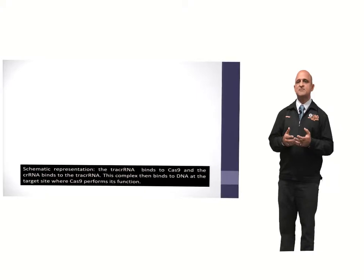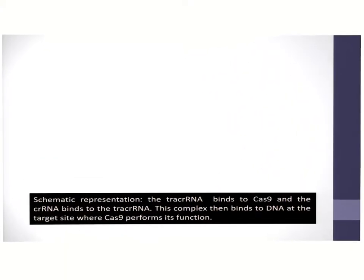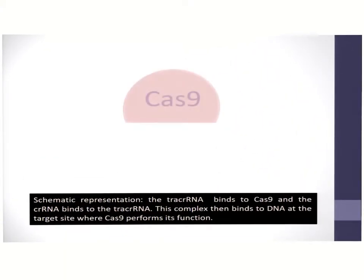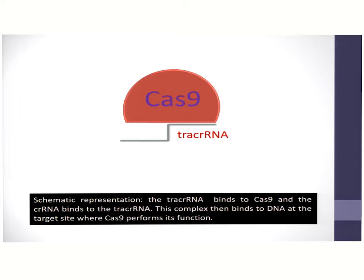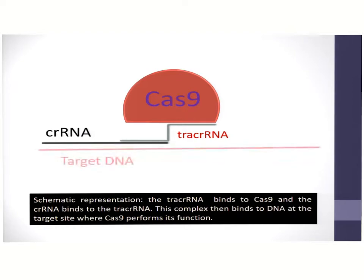This is a schematic representation of the elements of the CRISPR-Cas system. The key element is the enzyme Cas9, which is a programmable endonuclease. The second element is the tracer RNA. The third element is the crRNA. These together combine to target the DNA sequence, which is programmed in the crRNA.